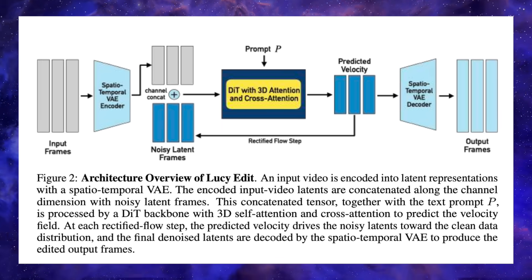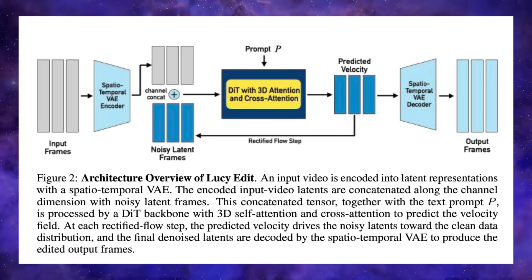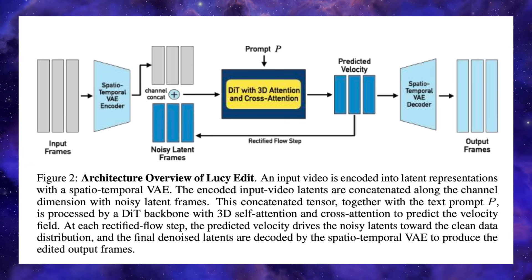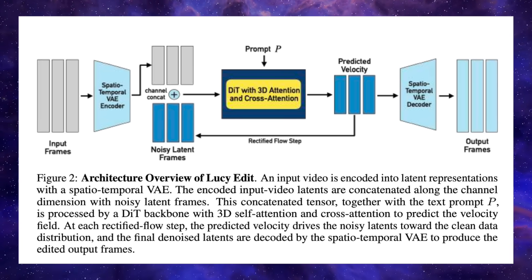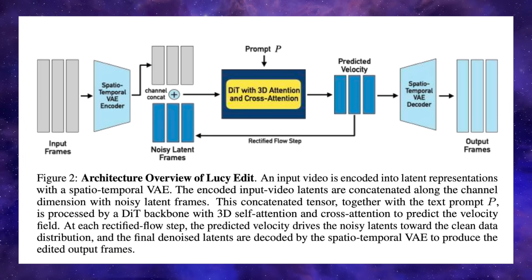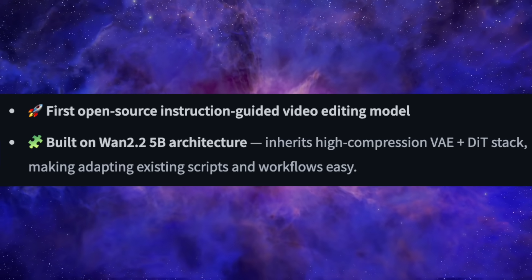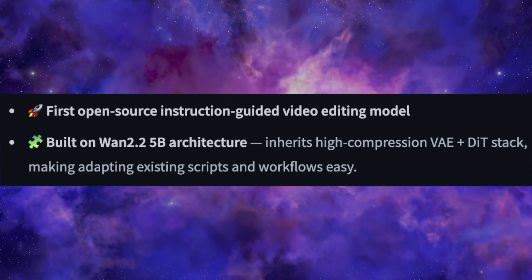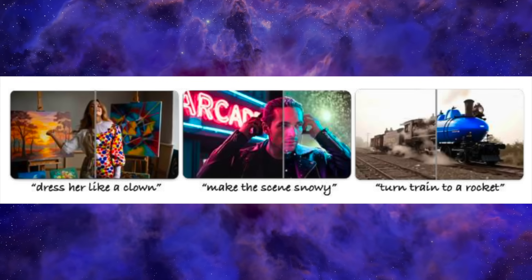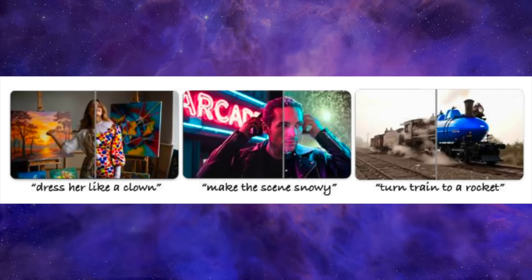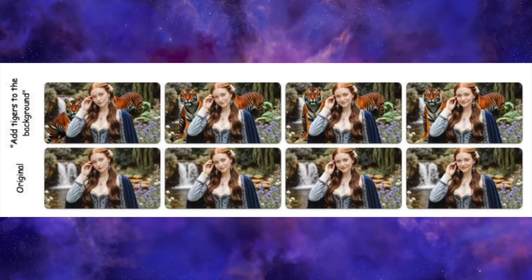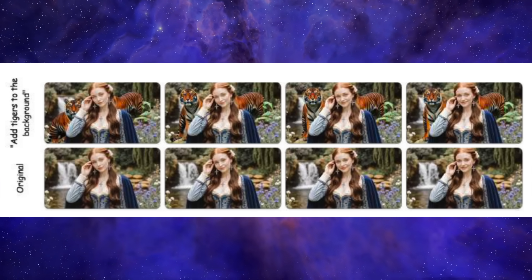Here's the brilliant part: at every single step of the denoising process, it takes the current half-finished video data and literally staples the compressed data from your original video right alongside it. This forces a diffusion transformer to constantly look at the original video's blueprint while it works on the new one. The core of this architecture is based on the powerful WAN 2.2 5 billion parameter model — already a very capable and well-regarded open-source video generation model. LucyEdit takes this powerful base and cleverly adapts it for high-fidelity editing, which is why it's so good at preserving subject identity, keeping the background stable, and matching the original motion so precisely.